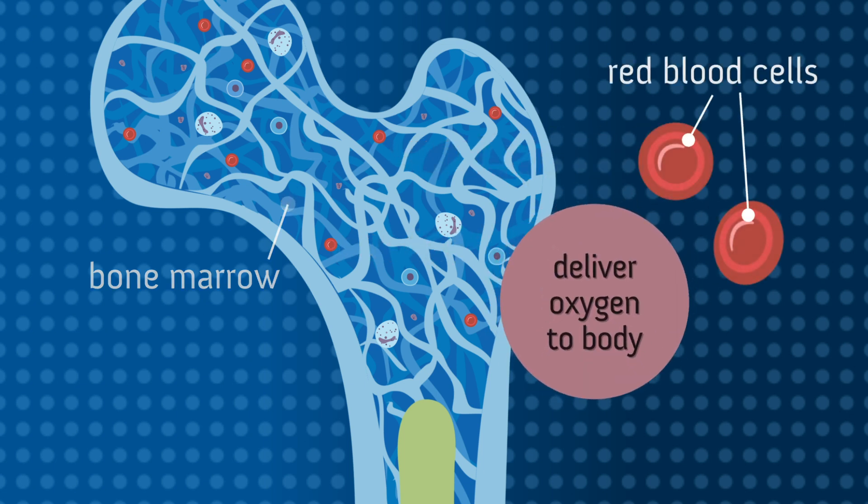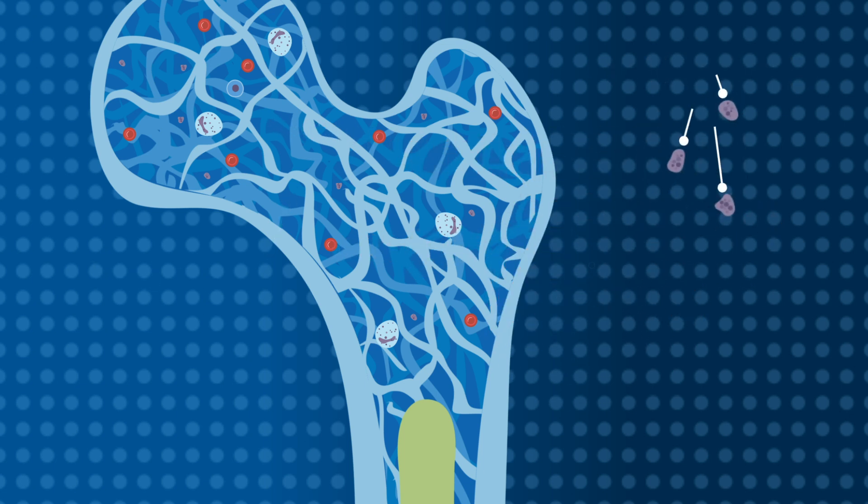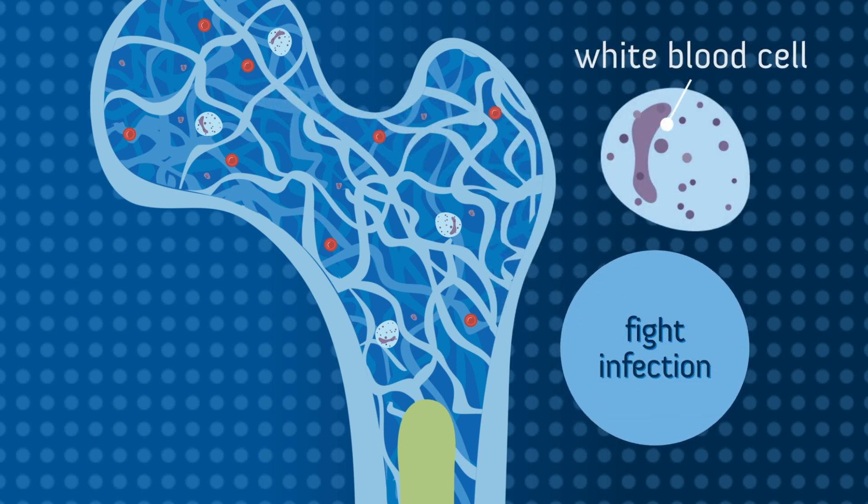Red blood cells that deliver oxygen throughout your body, platelets that help your blood to clot when you bleed, and white blood cells to help your body fight infection.